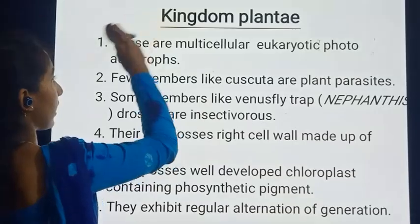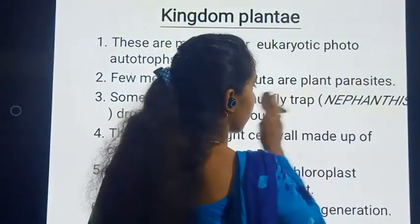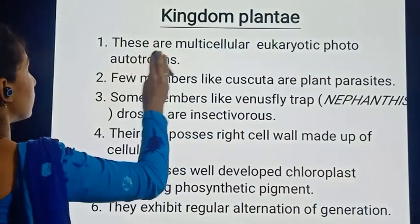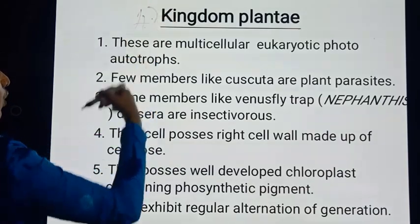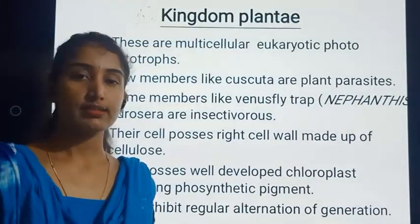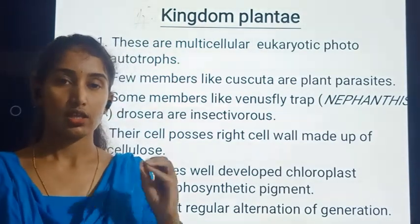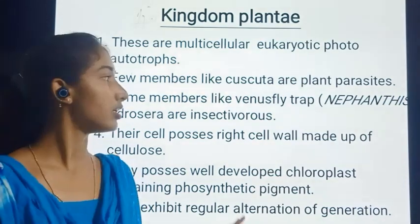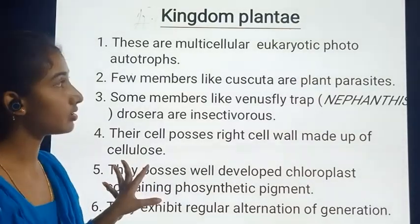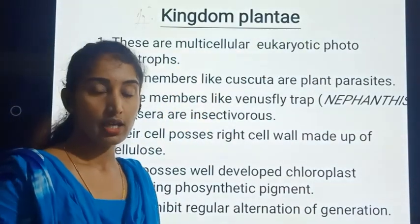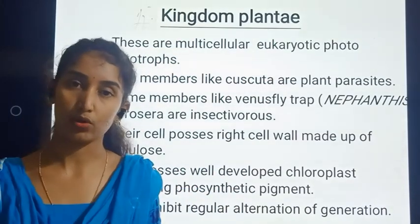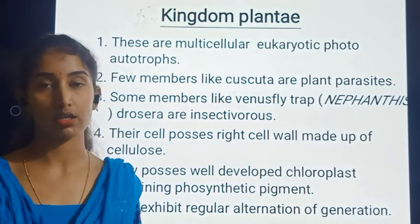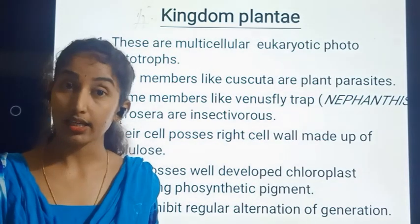That concludes Kingdom Fungi. We have completed the general characteristics and the different classifications under Kingdom Fungi. Now we move to the fourth kingdom: Kingdom Plantae. Under the five-kingdom classification, we have completed Kingdom Monera, Kingdom Protista, and Kingdom Mycota. We will not study their classification in detail here, as it is covered in a separate chapter; we will only note some general characteristics.